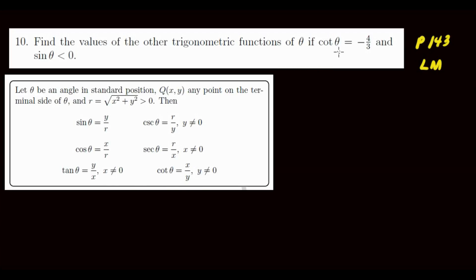So cotangent theta is equal to negative four-thirds. Cotangent theta is equal to x over y, where y must not be zero. And sine must be less than zero — less than zero means sine is negative. We need to find in which quadrant cotangent is negative, because this is negative four-thirds. At the same time, your sine is also negative.